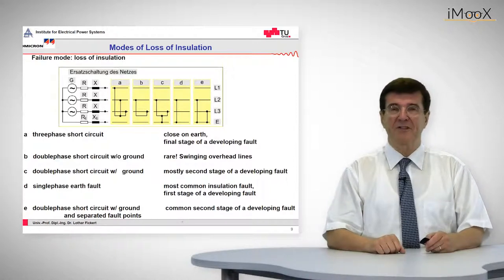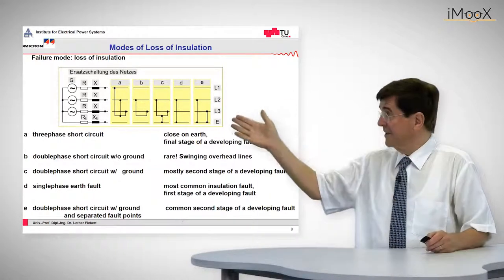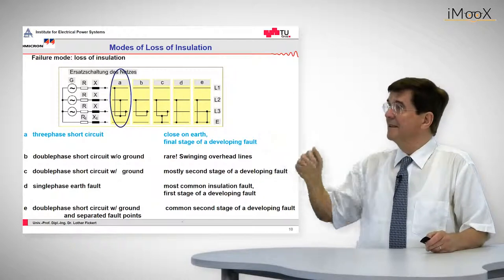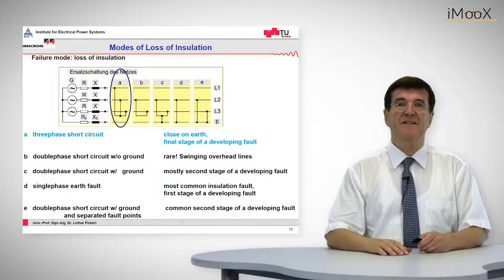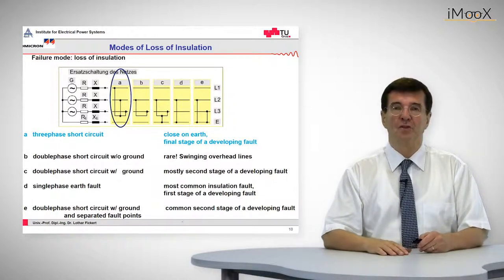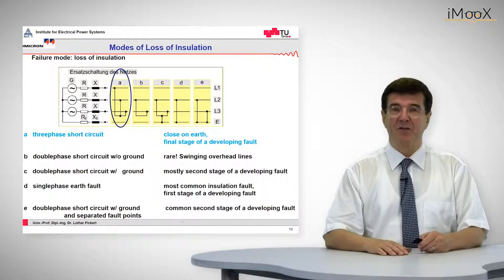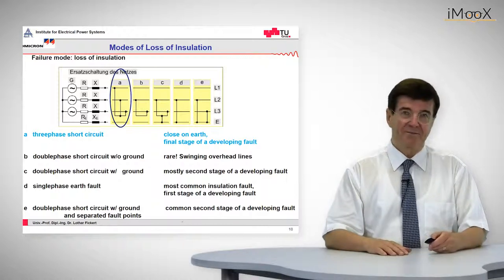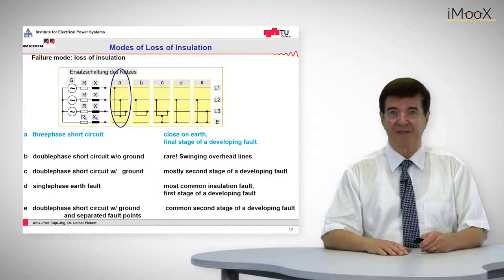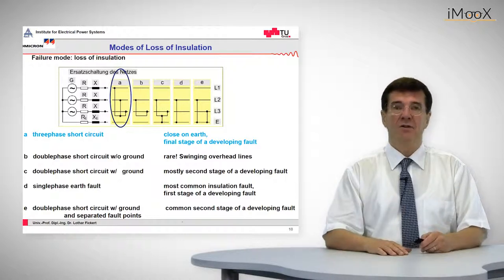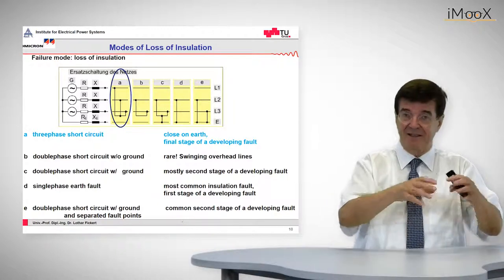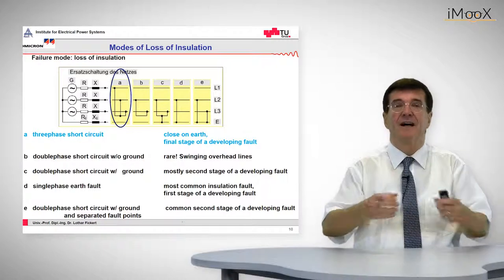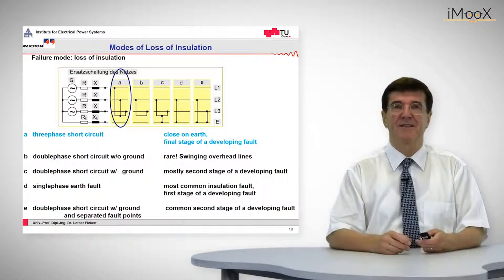The classic classification of these is as we can see to my right side. Let's start with fault class A, which is the three-phase short circuit. This is the easiest one to calculate but in reality it is very rare. Three-phase short circuits normally occur only either by closing on ground — that is a switching error — or at the last stage of a developing fault. A developing fault starts as a single or double-phase fault and the arc burns until the whole thing ends up as a three-phase fault.